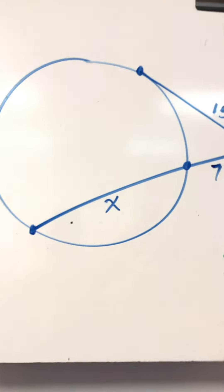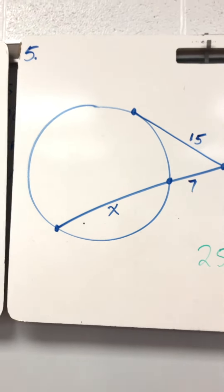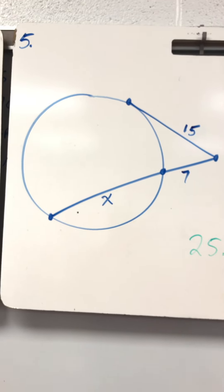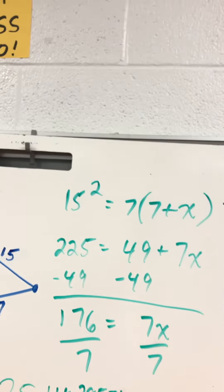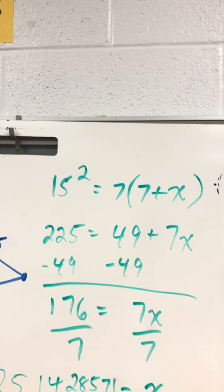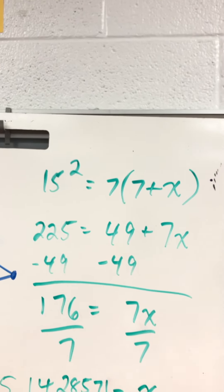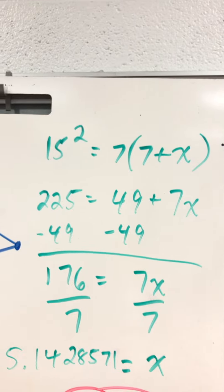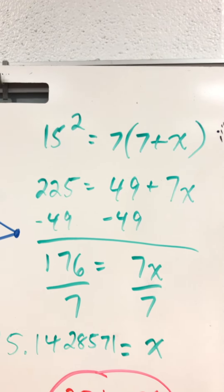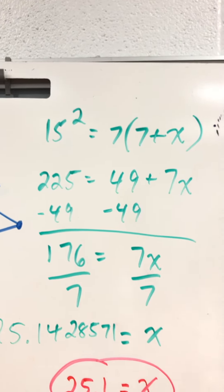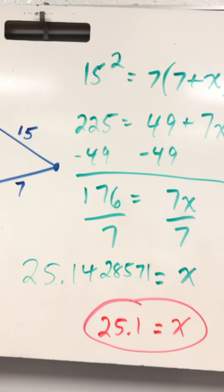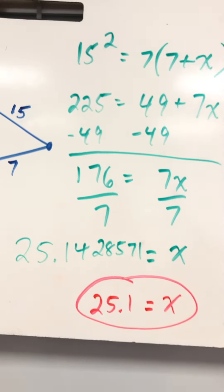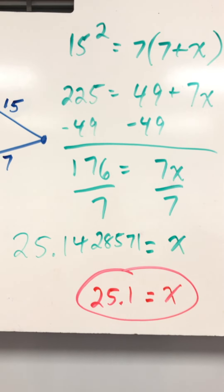Over here, 15 squared equals 7 times 7 plus X. Distribute the 7. You get 49 plus 7X. Minus 49 from both sides. 176 equals 7X. Divide by 7. You get 25.14 repeating. Round to 25.1.